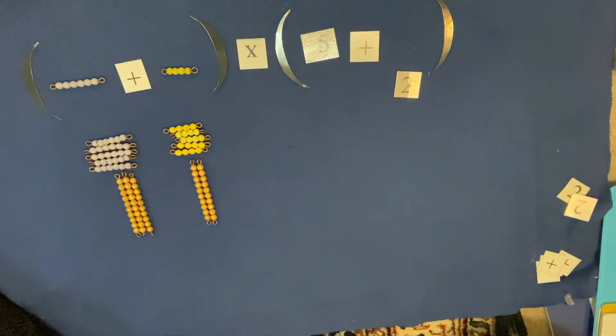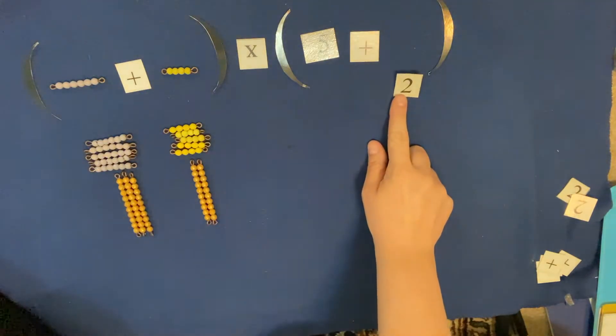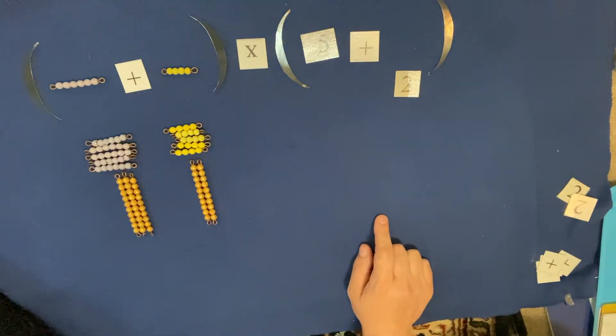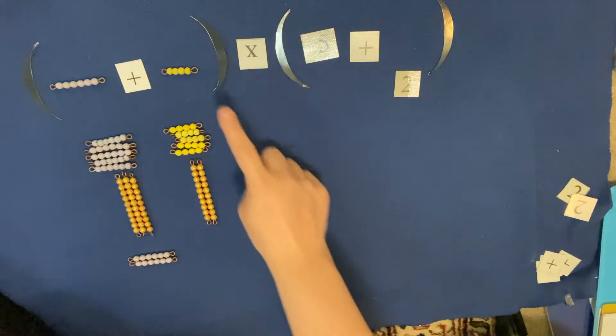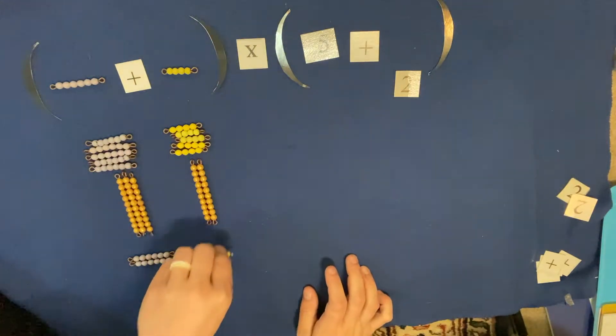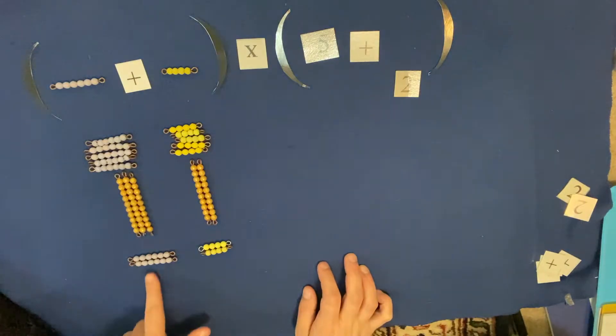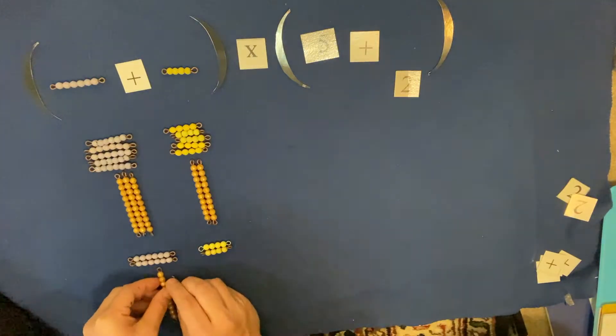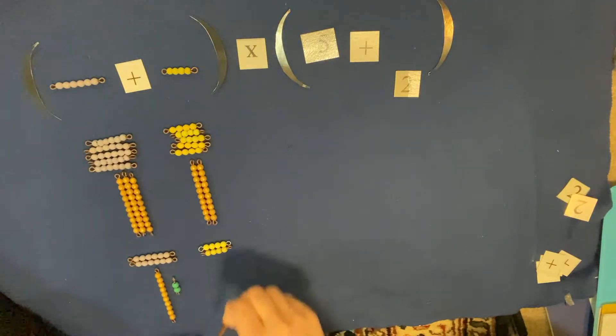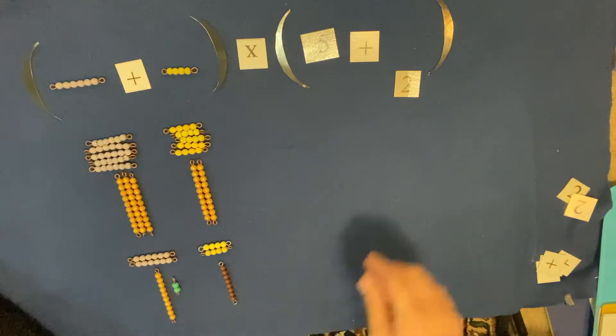And what is four times five? Four, eight, twelve, sixteen, twenty. Look at that. Cool. All right, now we're gonna multiply everything by two. So six times two and four times two. What is six times two? Yes, six times two is twelve. And what is four times two? Eight.